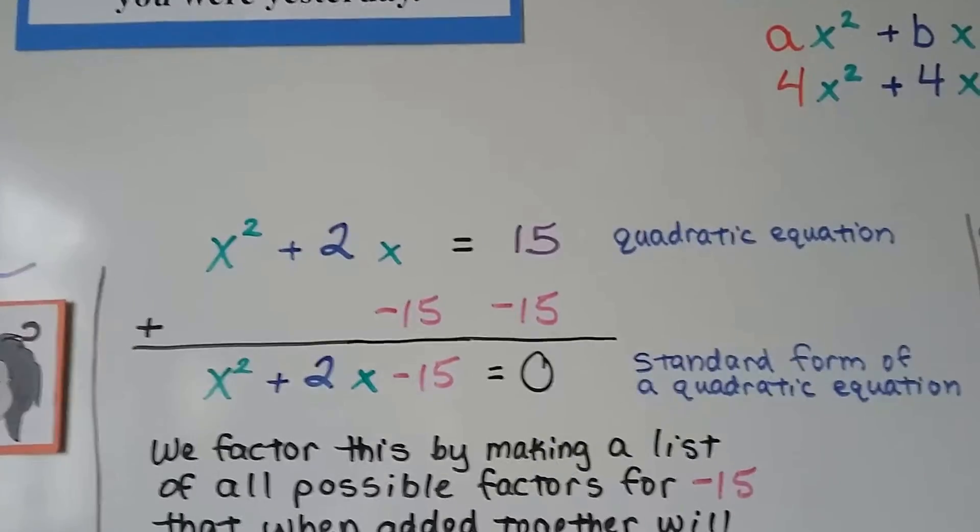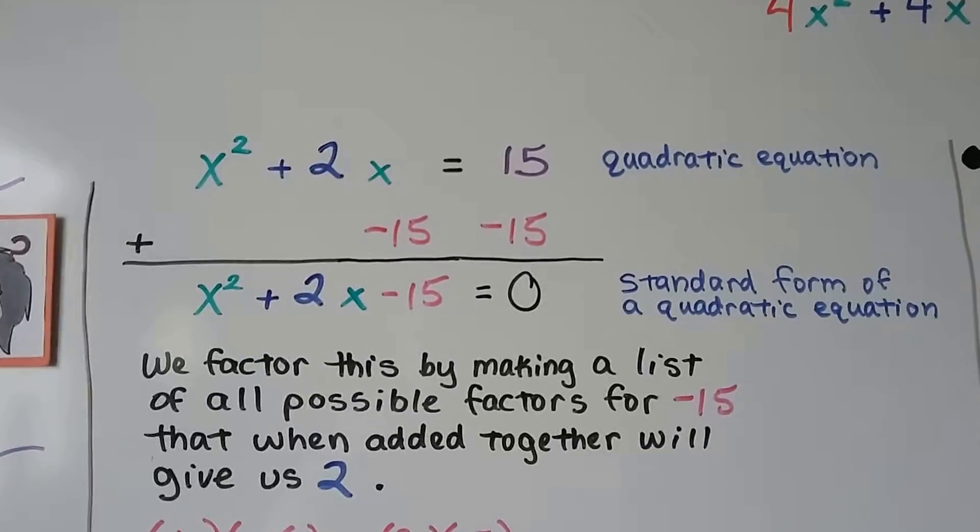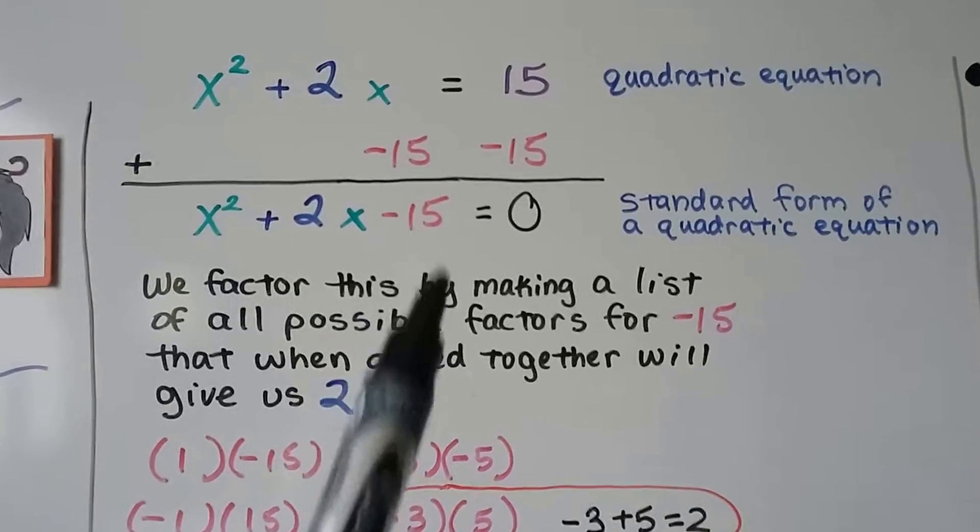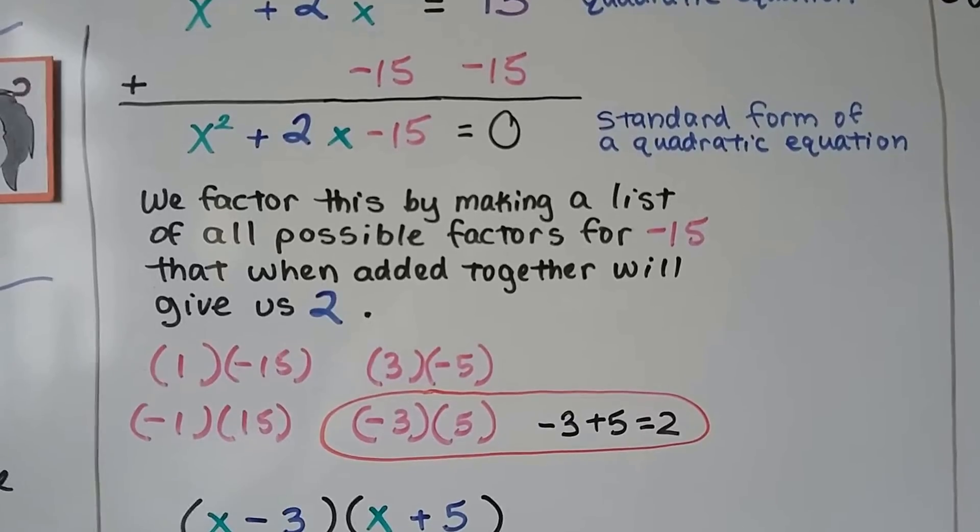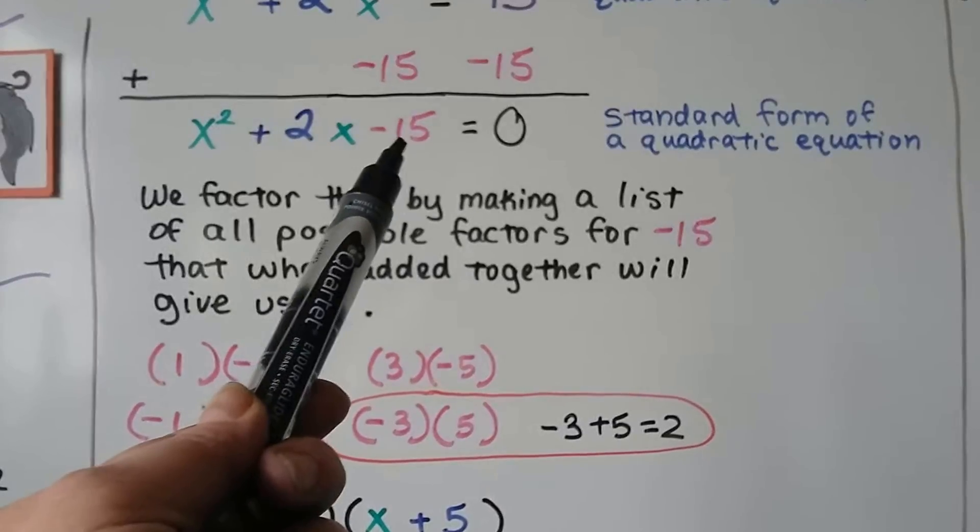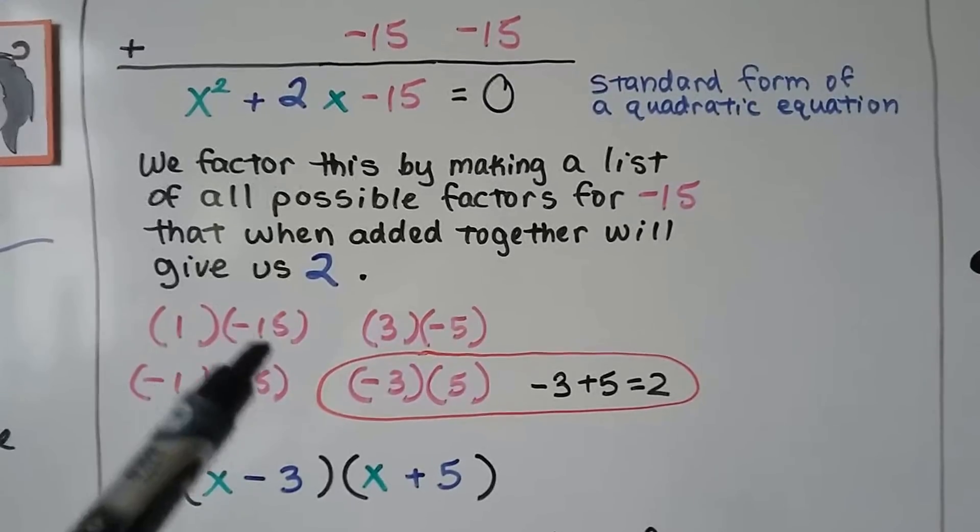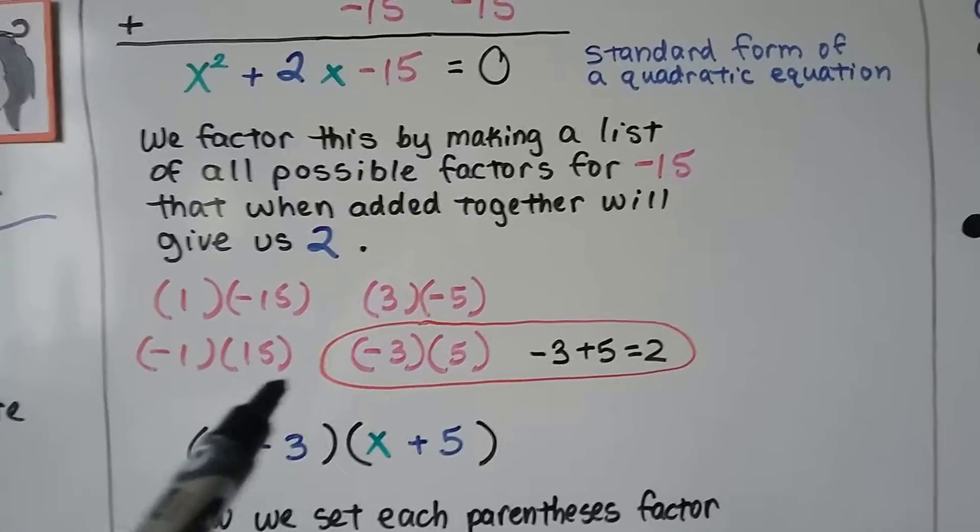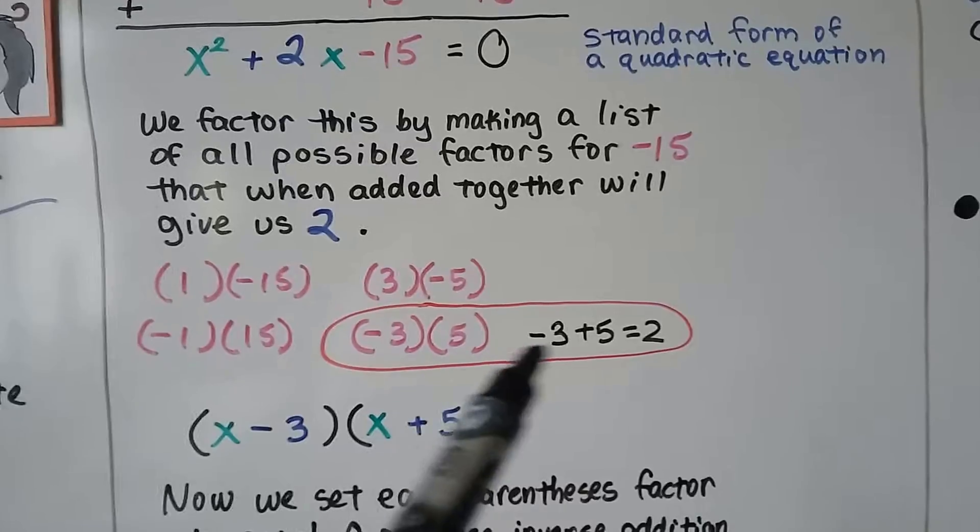So here we've got a quadratic equation, x squared plus 2x equals 15. We're going to add a negative 15 to each side of the equation to put it in its standard form. And now we can factor this. We factor it by making a list of all the possible factors for negative 15 that, when added together, will give us a 2. So what two numbers can be multiplied together to get a negative 15? But when we add them, we get a 2. Let me make a list of all the possible factors for negative 15. These won't equal 2 when we add them together. This negative 3 and this 5 will. Negative 3 plus 5 pushes us into the positive, to a positive 2.